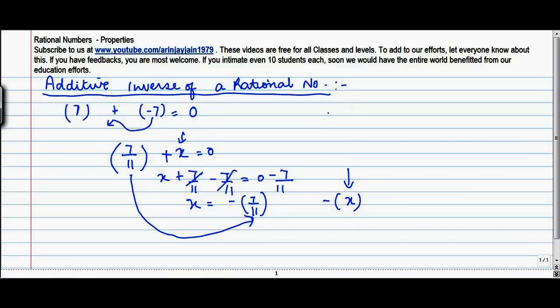So, if you have to find the additive inverse of x, the additive inverse of x is minus x for rational numbers as well.